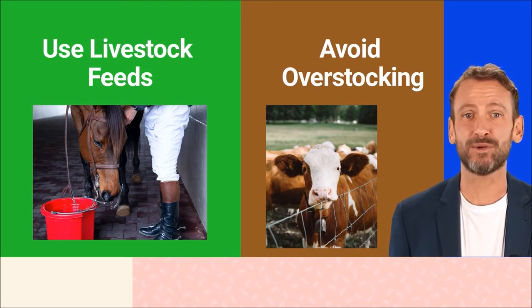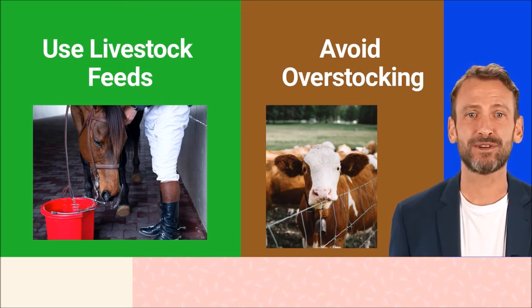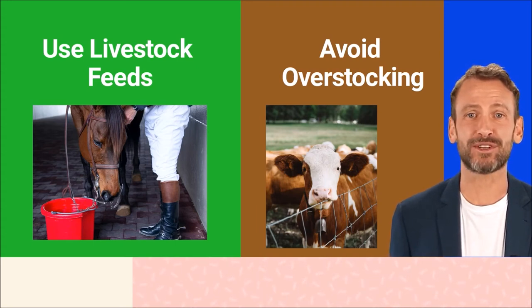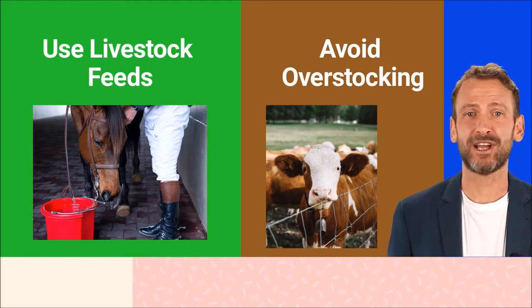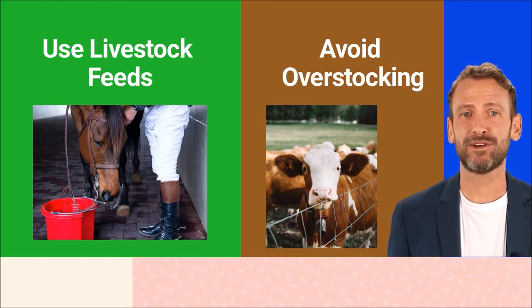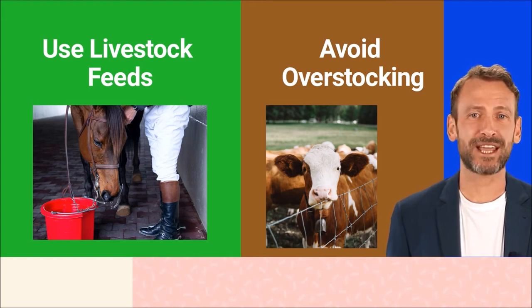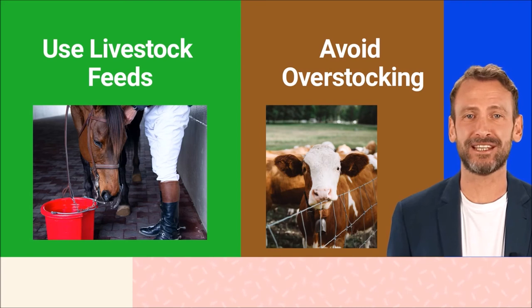Avoid Overstocking — farmers should keep the right number of animals to prevent overgrazing. The available land should support the grazing habits of the livestock at all times. If the number of livestock increases, farm managers should expand the grazing fields.